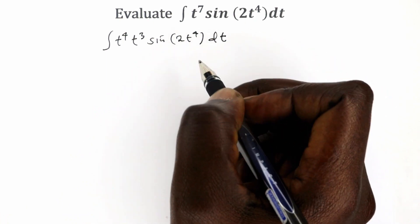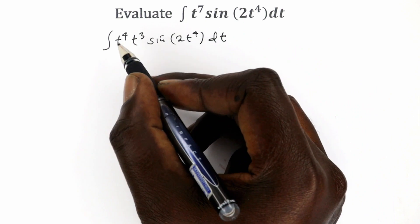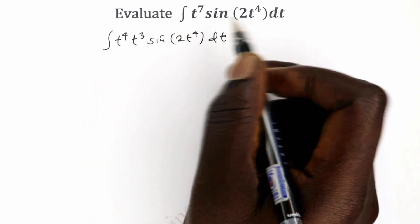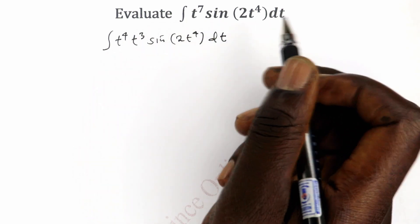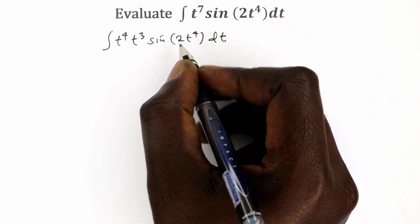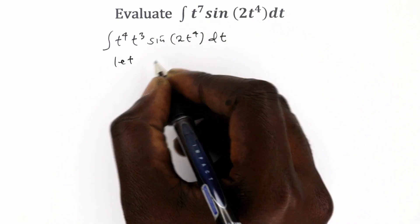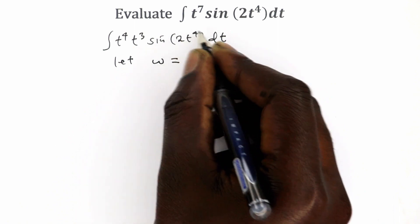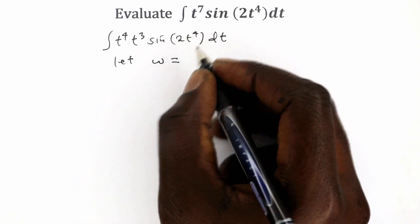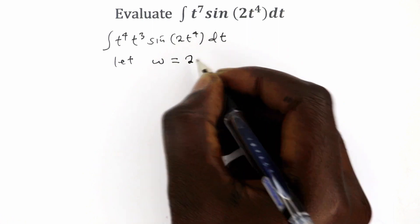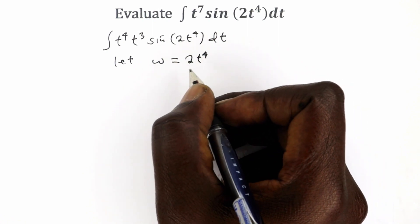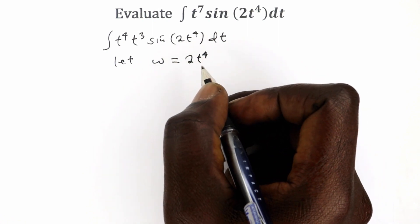We can express t^4 and t^3 in terms of a different letter. We can let the term within the bracket be represented by another letter. So let that letter be w, where w equals 2t^4.